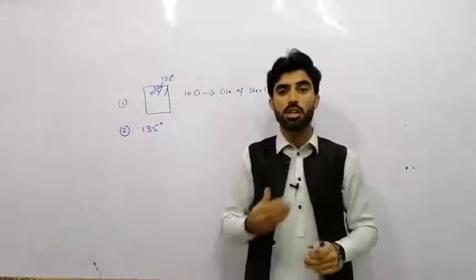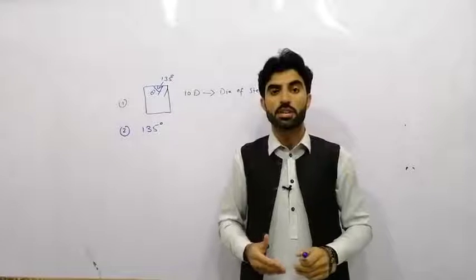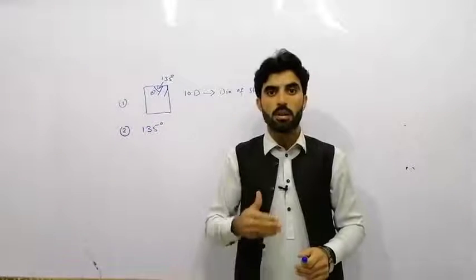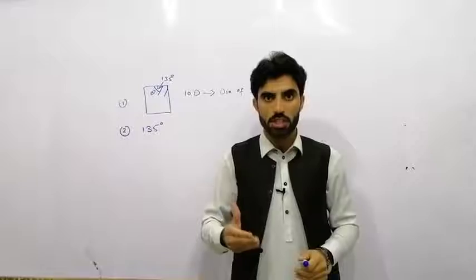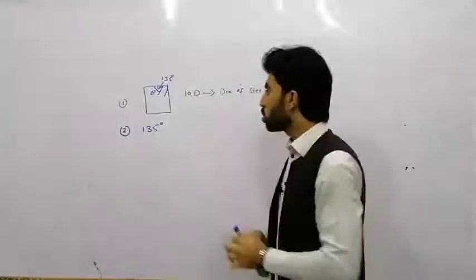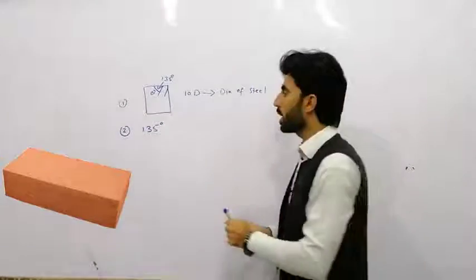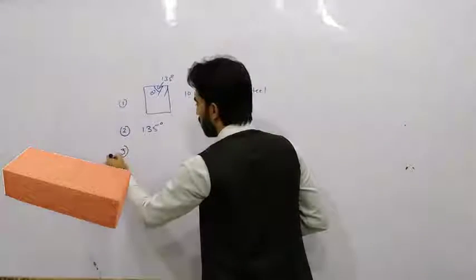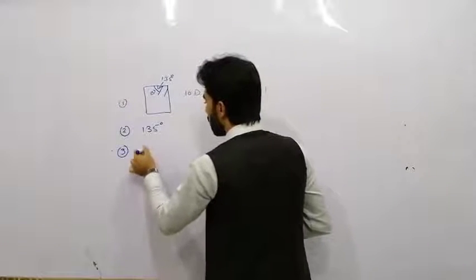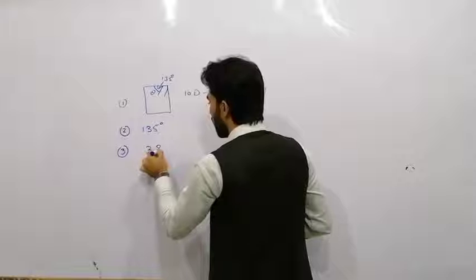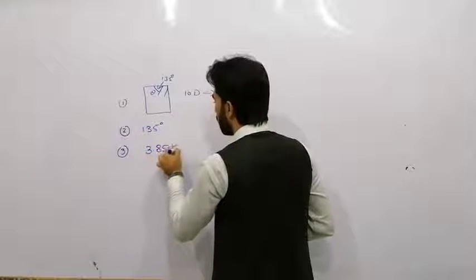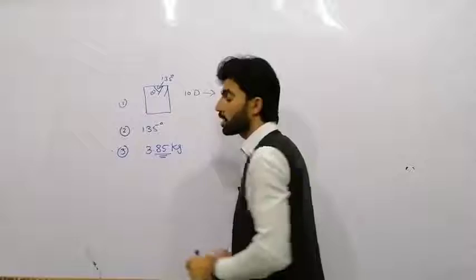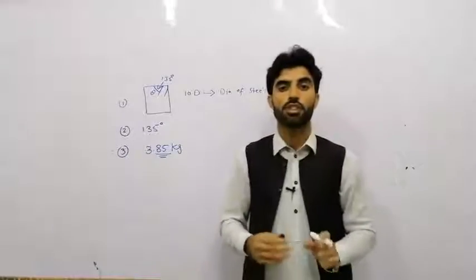The third question is: what is the standard weight of a first class brick? The answer is that the standard weight of a first class brick is 3.85 kg.